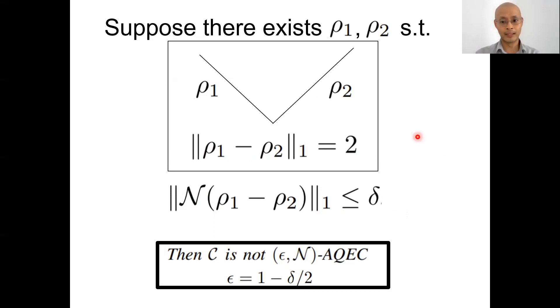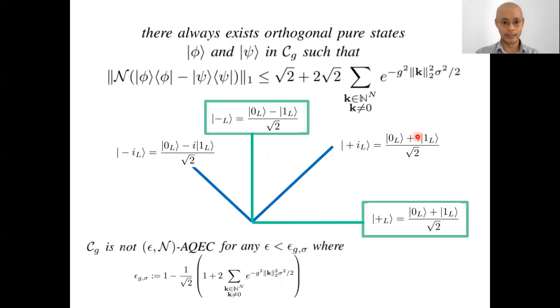All right. What can we do with this lemma? Next, we have another lemma over here. So what should we pick rho 1 and rho 2 to be? We can pick them to be some pure states inside C_g. And in fact, the claim now we're going to make is that they always exist, orthogonal pure states, in this g-gap code space such that this upper bound holds.